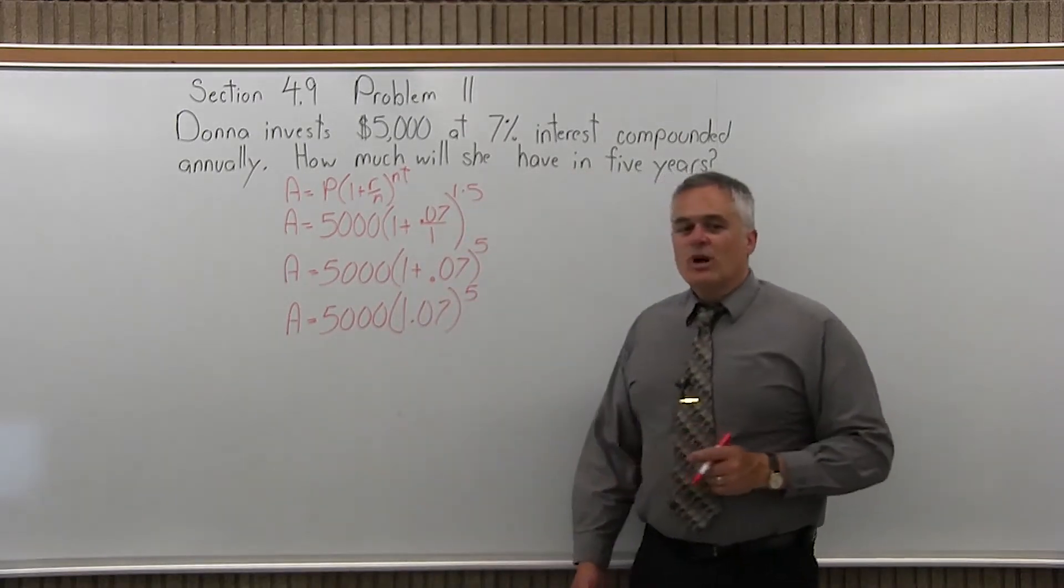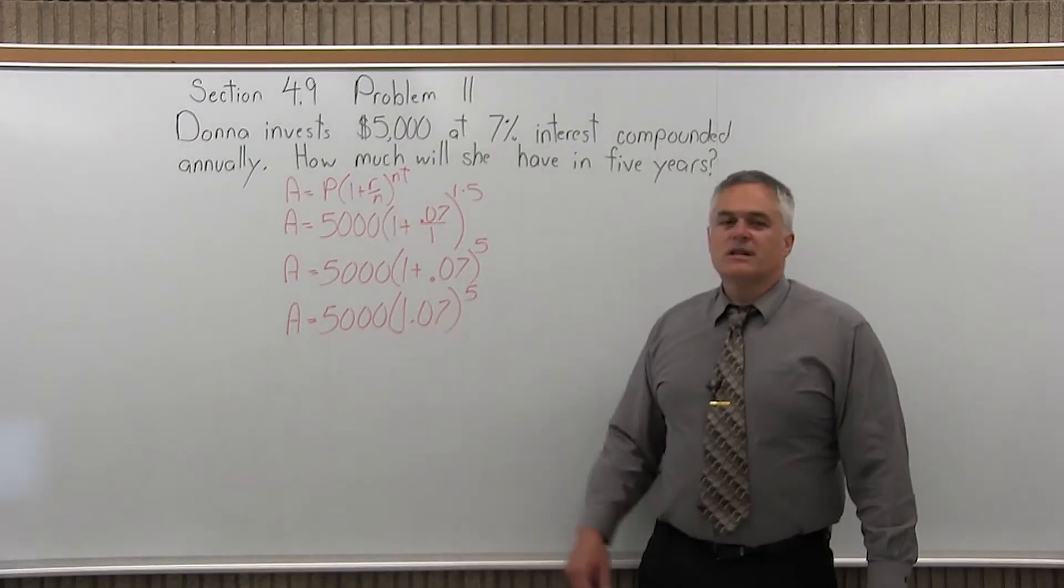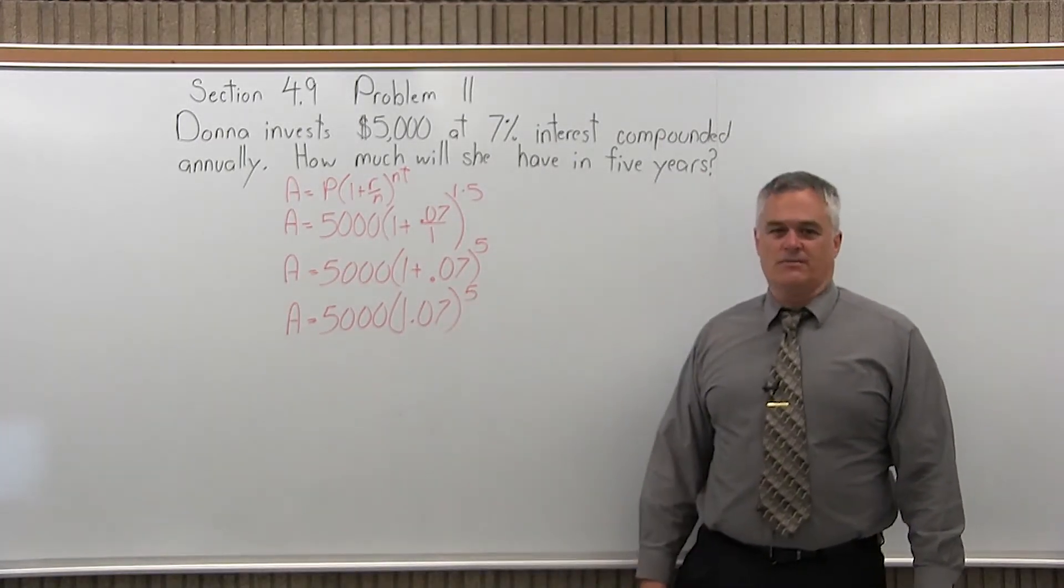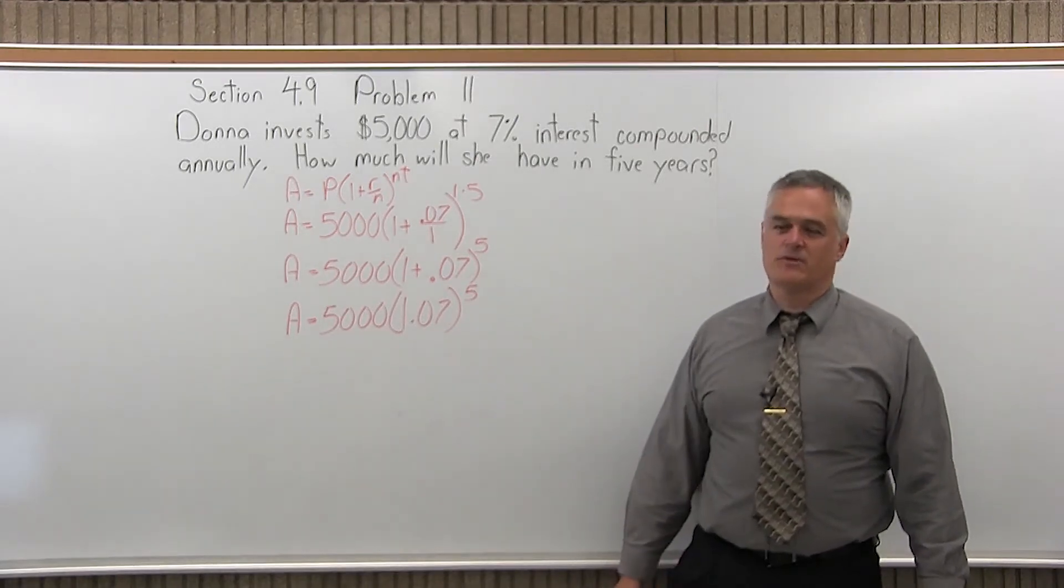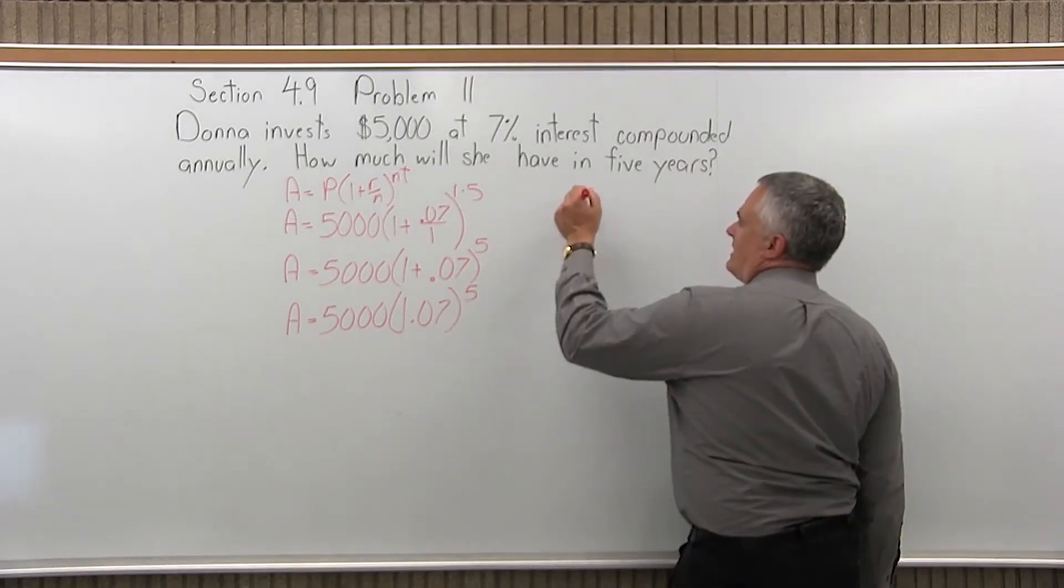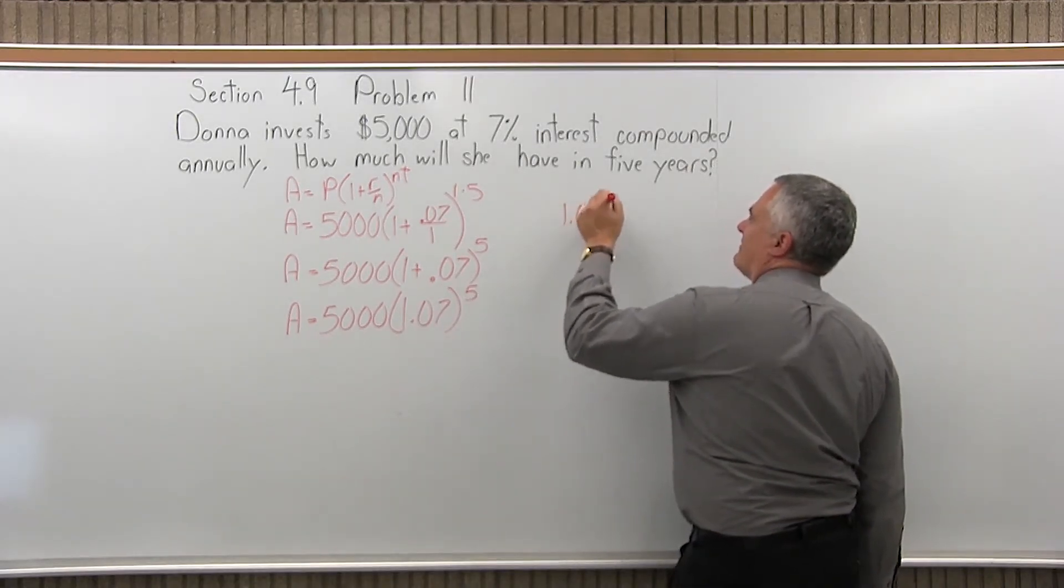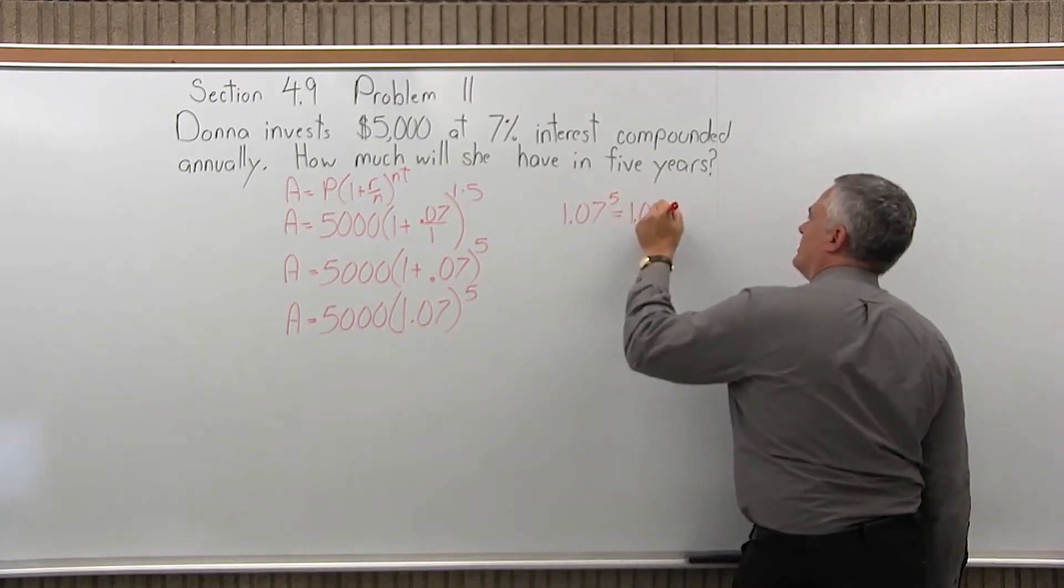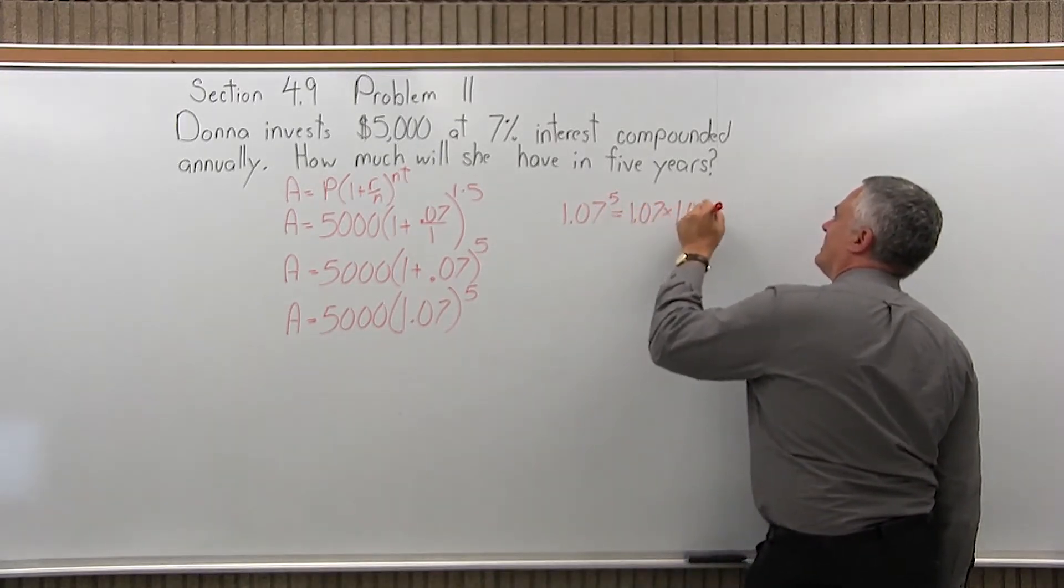So now we're down to two operations. There's a multiply, 5,000 times the parentheses, and there's an exponent, the parentheses to the fifth power. You have to do the exponent first. You just have to. That's the way the order of operations is. So, off to the side here, 1.07 to the fifth power is 5 1.07s multiplied together.